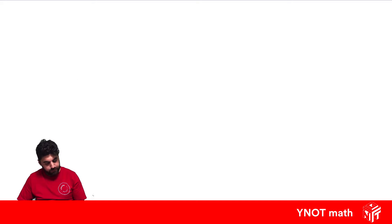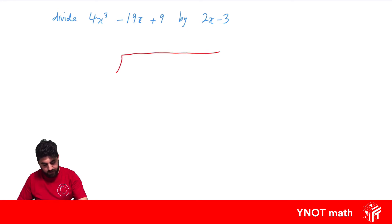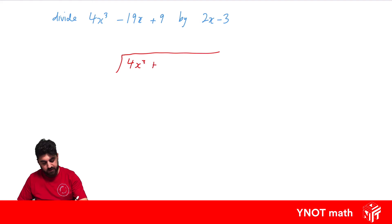Let's look at another example. We want to divide 4x cubed minus 19x plus 9 by 2x minus 3. We write it in long division form, but we need to be careful — this is a cubic polynomial missing the x squared term. So we write it in with a zero coefficient: 4x cubed plus 0x squared minus 19x plus 9, all divided by 2x minus 3.